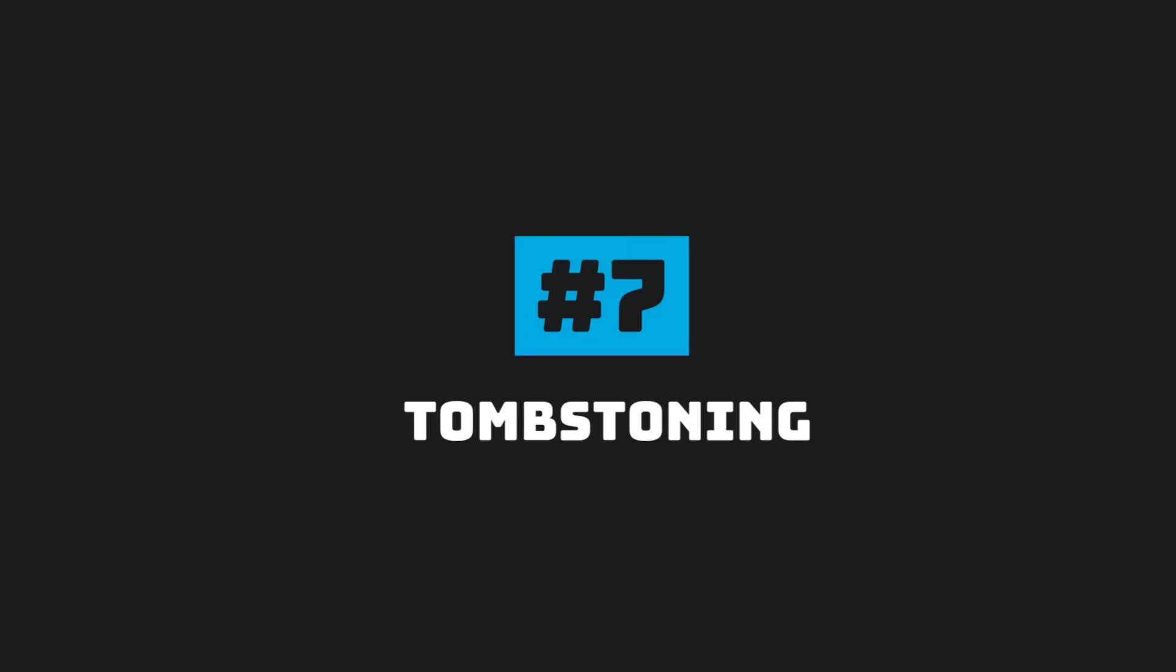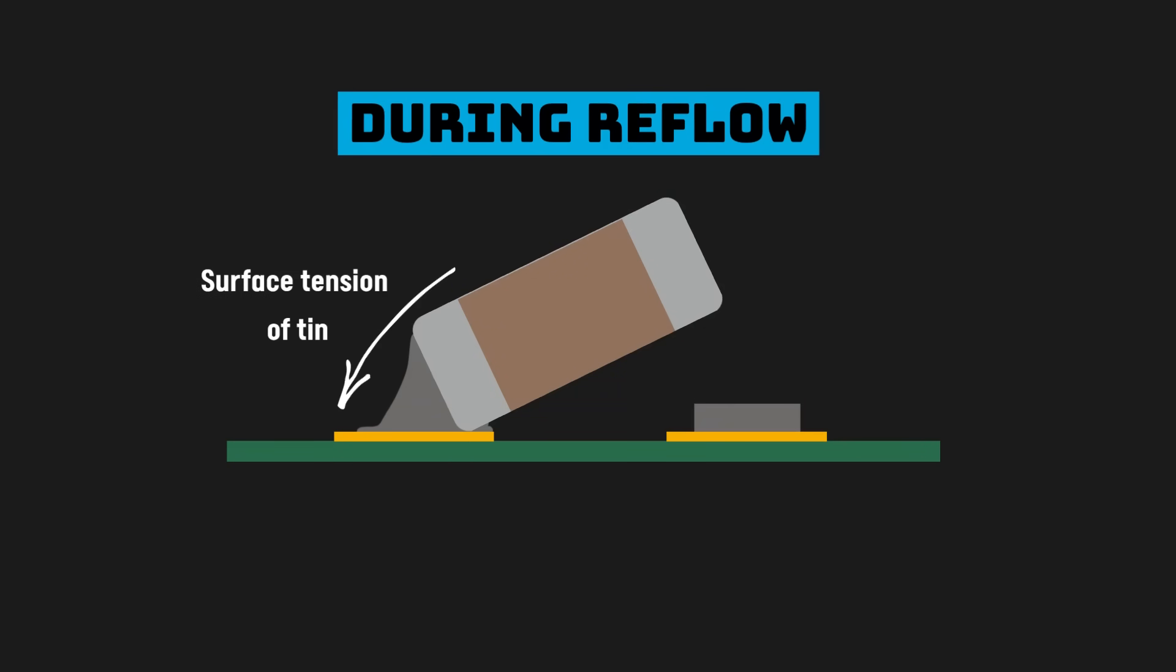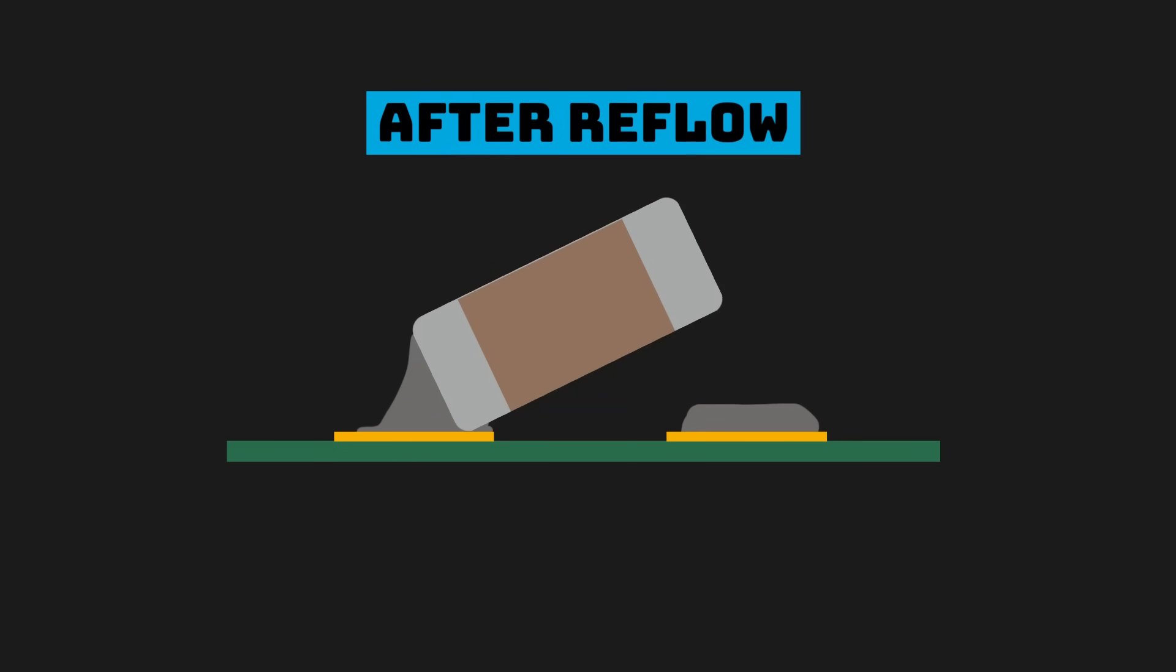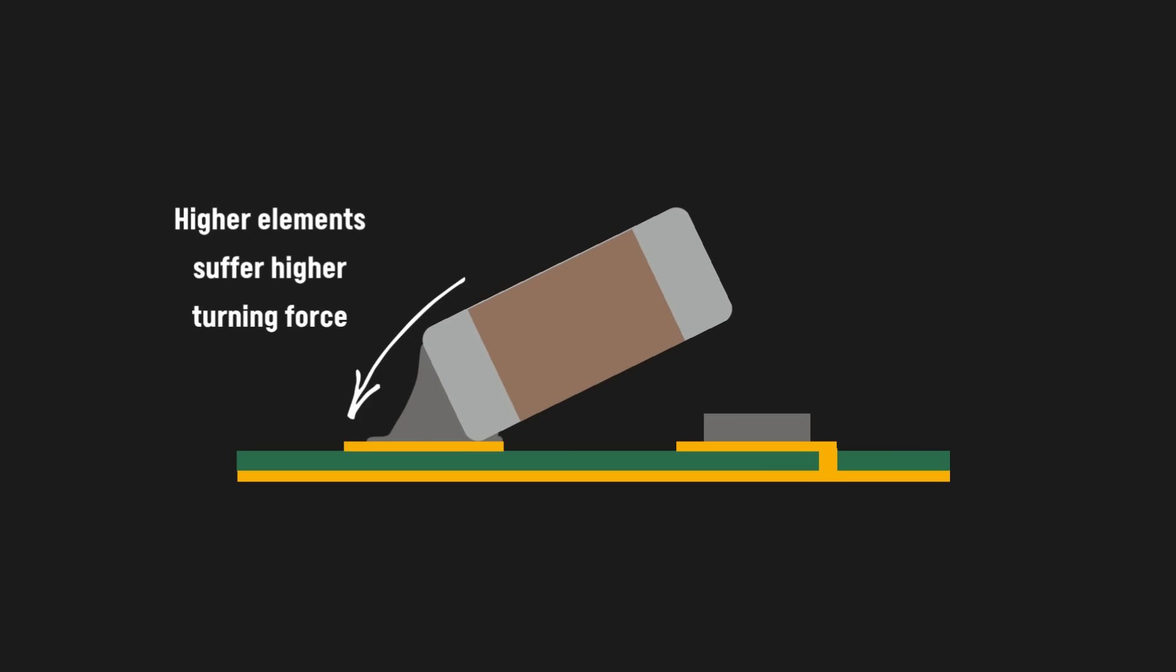But if you never manufactured a board, tombstoning may be a new term for you. It happens during the reflow stage, whenever the solder paste melts quicker on one side than the other, as surface tension is enough to lift these capacitors up. This effect can happen with most two terminal components, but happens very often with MLCCs due to two factors. The higher height of these components and the fact that they are often connected on one side to the ground plane, which increases the chance for delayed melting of the solder paste.